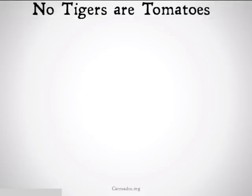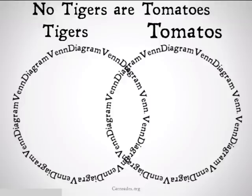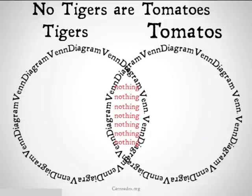So if we took the statement, 'no tigers are tomatoes,' as a specific example, we'd set up our Venn diagram with tigers on the left, tomatoes on the right, and shade in the area in the middle, because no tigers are tomatoes. There's nothing that fits in that area because there's nothing that's both a tiger and a tomato.